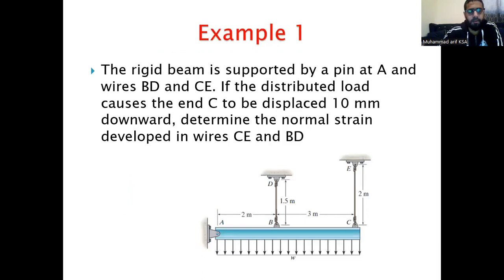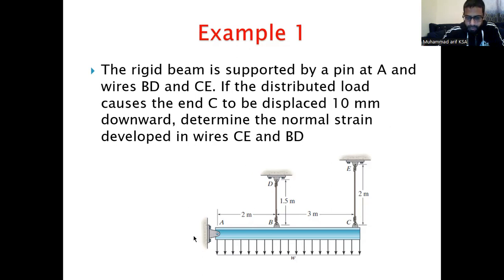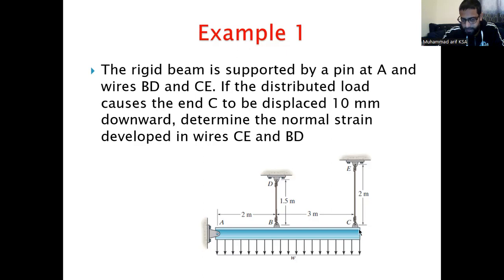Example 1: A rigid beam is supported by a pin at A and wires BD and CE. If the distributed load causes end C to be displaced 10 mm downward, determine the normal strain developed in wires CE and BD. The beam is subjected to a uniform distributed load, and we need to find the displacement in wires CE and BD.